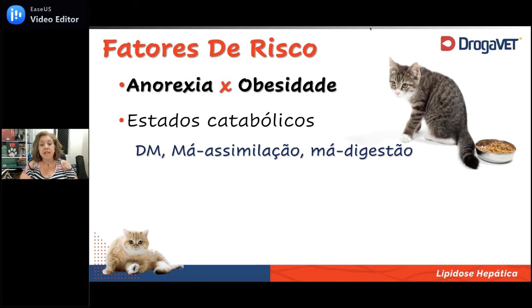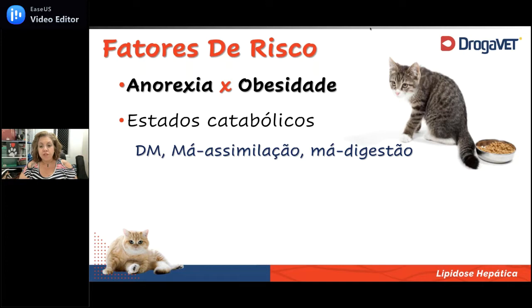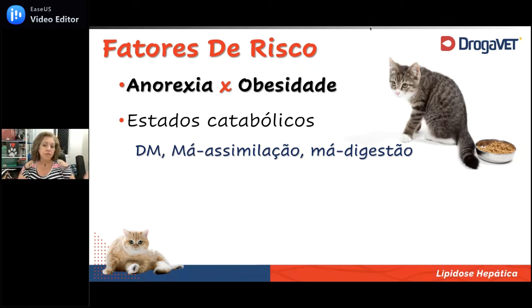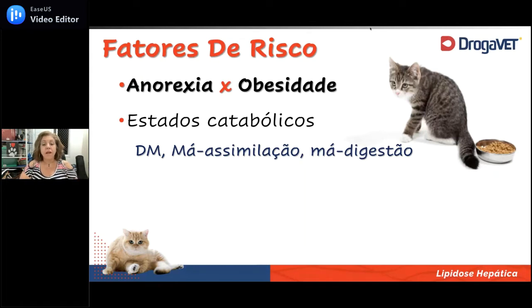Doenças em que a gente tem a má absorção de nutrientes também são fatores: indivíduos com atrofia de vilosidades intestinais, parasitismo intestinal crônico, giardíase, esporose crônica, doença intestinal inflamatória, linfoma alimentar — eles têm má absorção porque a absorção é comprometida. E indivíduos que fazem má digestão, como os que fazem uso crônico de omeprazol ou têm insuficiência pancreática exócrina. Esses estados catabólicos, quaisquer que sejam, podem levar a esse tipo de processo.